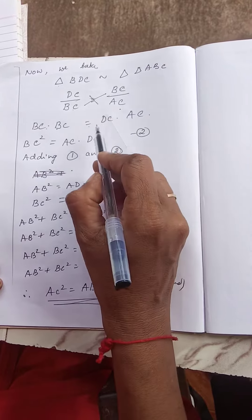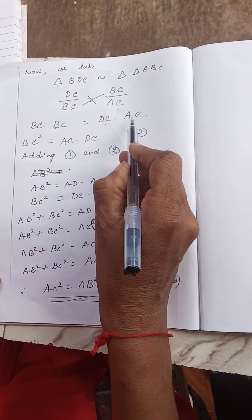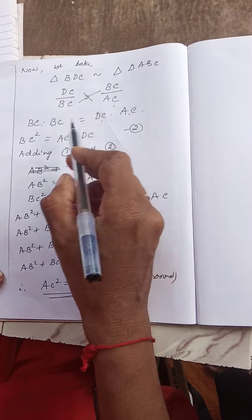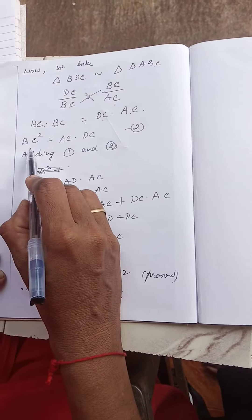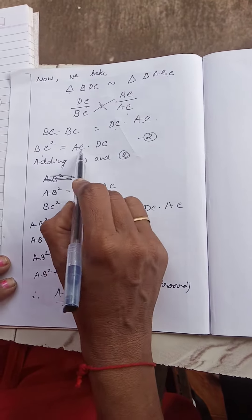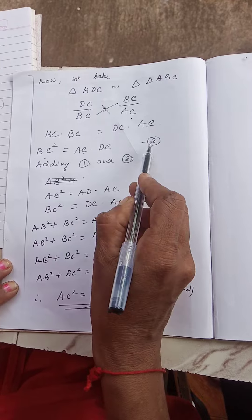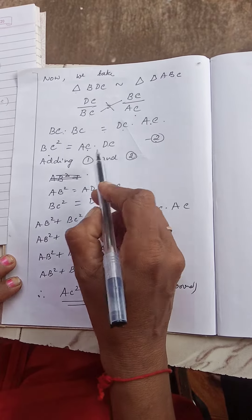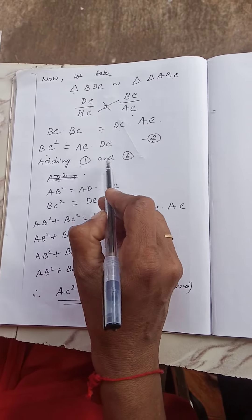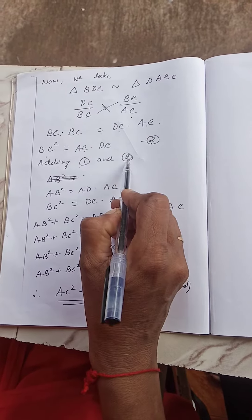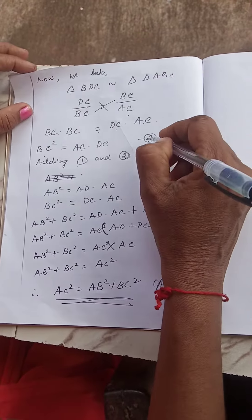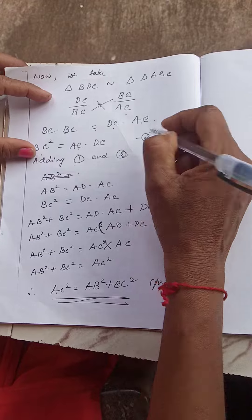BC into BC is equal to DC into AC. So BC square is equal to AC into DC. Now adding equation 1 and equation 2. This is equation number 2.